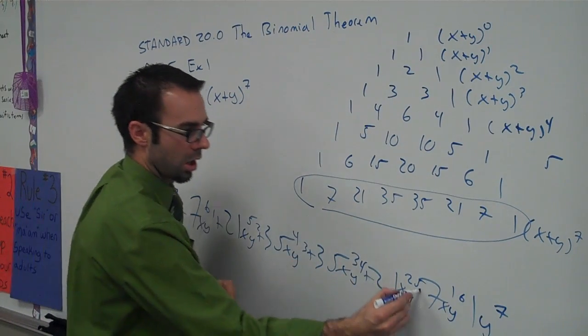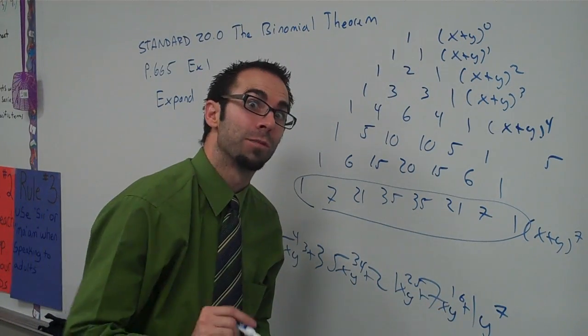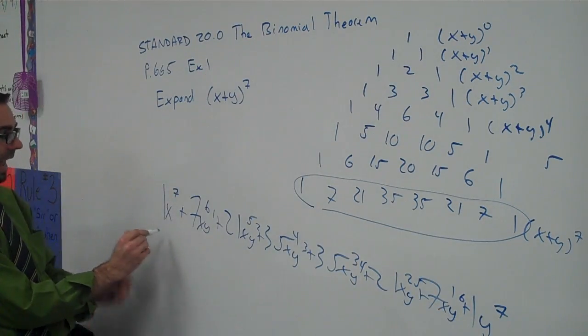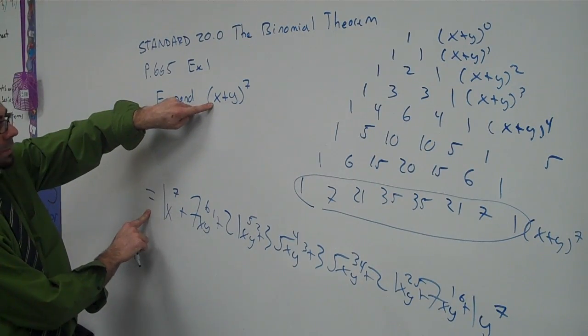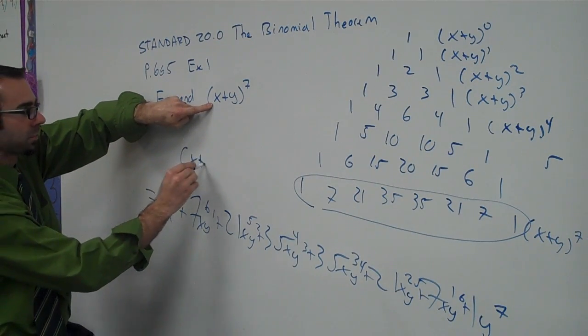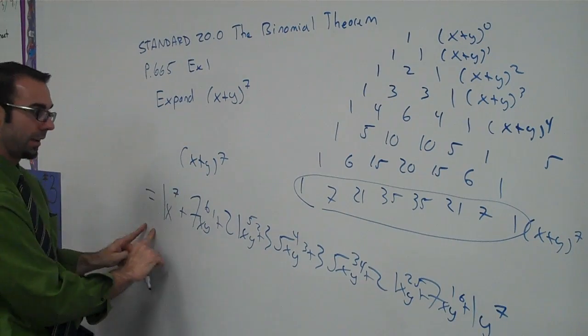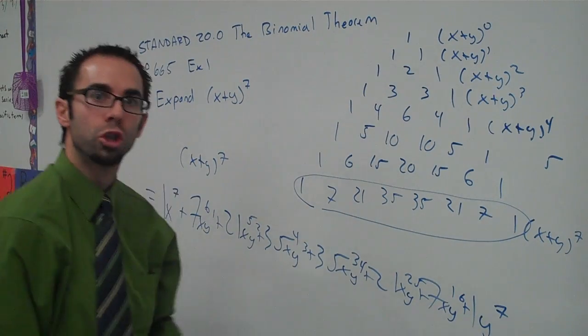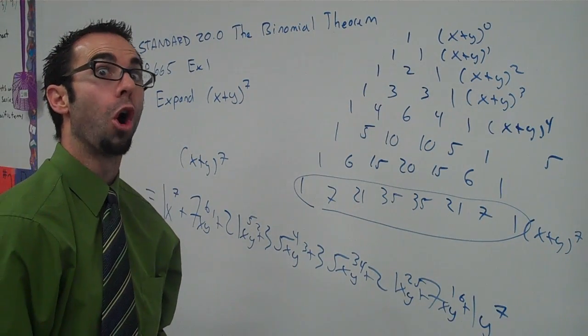And then we put in our plus signs. Plus, plus, now we're going to have class in just a moment. And there it is. This right here is the expanded form of x plus y to the power of seven is equal to this whole tamale. It's a big one.